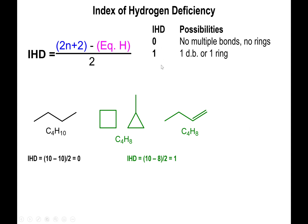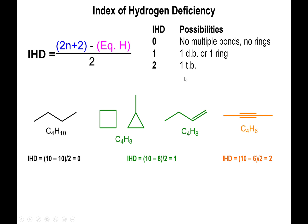If the IHD equals 1, you could either have a double bond in your structure or you could have one ring. When you look at triple bonds, the total number of hydrogens decreases further — for a 4-carbon alkyne, 2n + 2 = 10 minus the 6 hydrogens you actually have gives an IHD of 2.